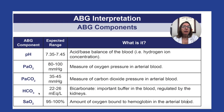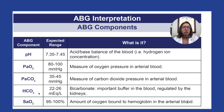In my next video, we will talk about the different buffers that are in our body that help to maintain acid-base balance. Then we'll get into the details of the different acid-base imbalances, such as respiratory acidosis, respiratory alkalosis, metabolic acidosis, and metabolic alkalosis. So stay tuned.